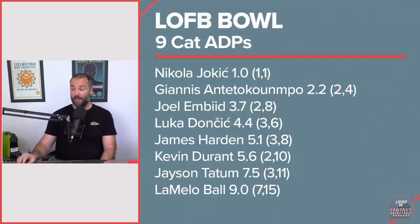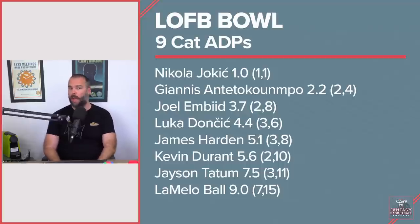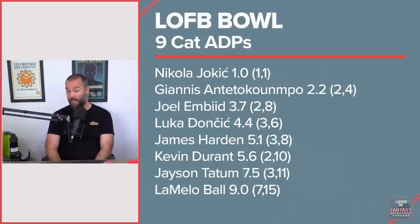Doncic was next with an ADP of 4.4; his range was tighter between 3 and 6. I'm surprised there wasn't at least one league where people said 'He's turnovers, he's free throws, he's actually the 29th ranked player because all nine categories matter equally.' I'm just shocked to see he never fell past 6.